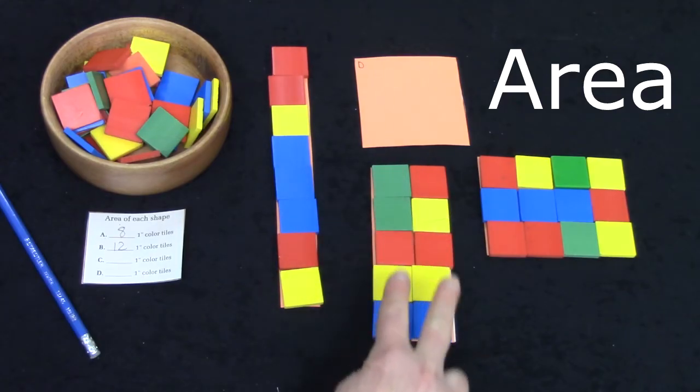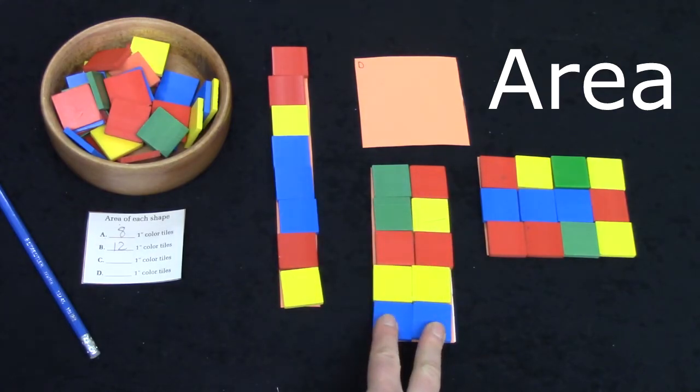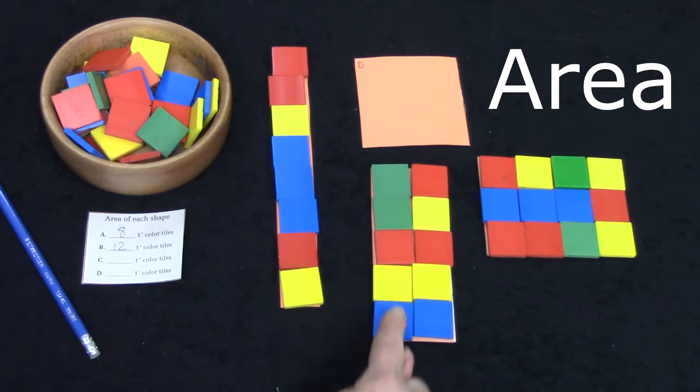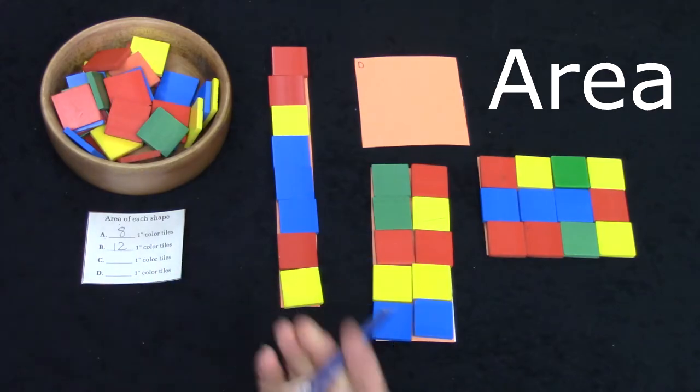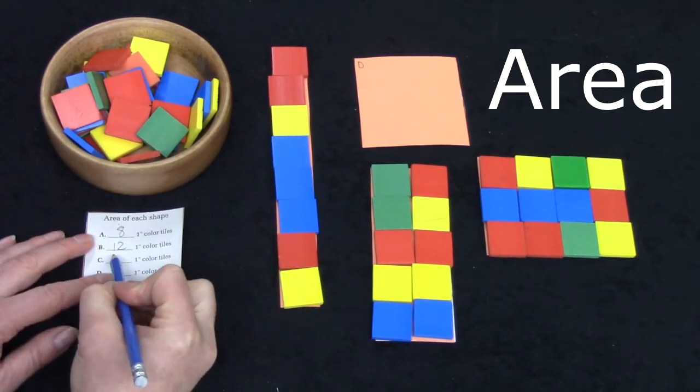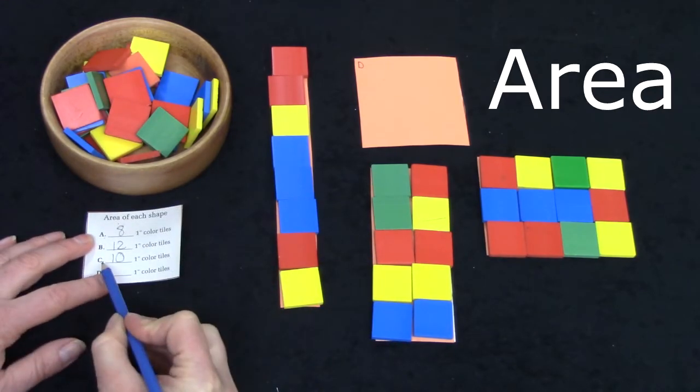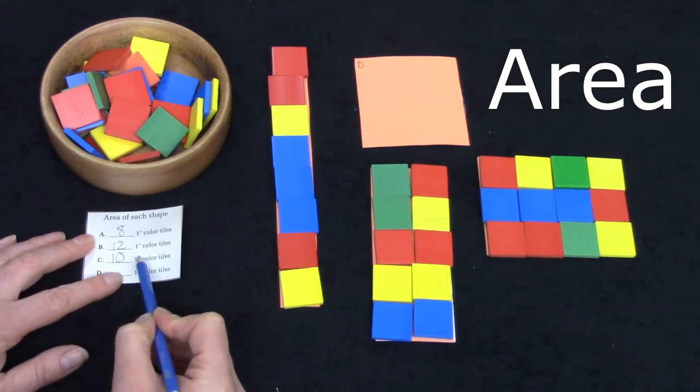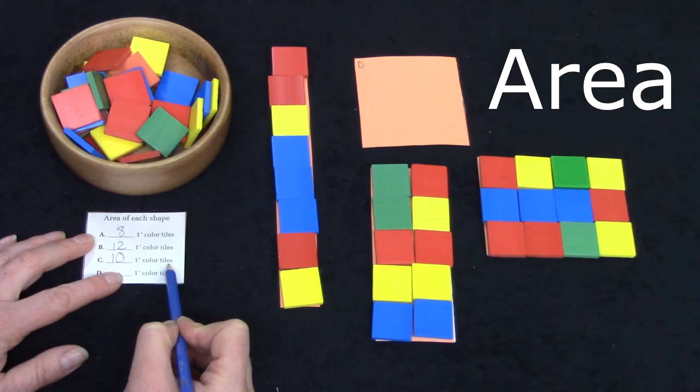Two, four, six, eight, ten. It is two wide and five high or long. I'm going to write down ten for shape C. Shape C is ten one inch color tiles. That is the area of the shape.